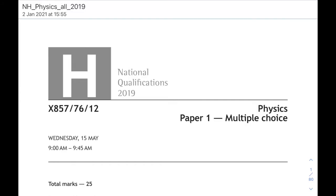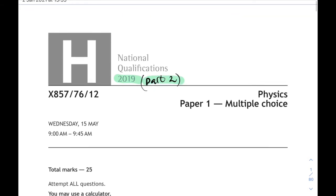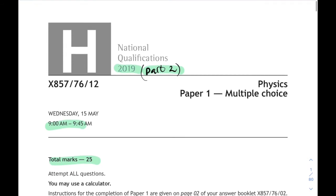Okay, hi everybody. This is the second part of the 2019 Higher Physics multiple choice paper. We're going to have a look at questions 17 to 25. This was the first year there was 25 marks in the multiple choice paper, and it was split into paper 1 and paper 2. This was paper 1, 45 minutes to do the multiple choice paper.